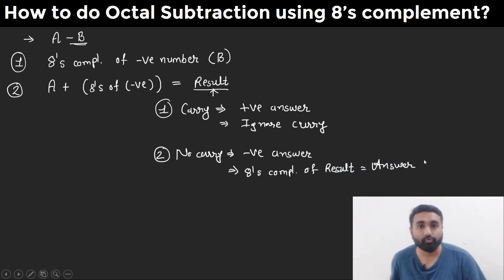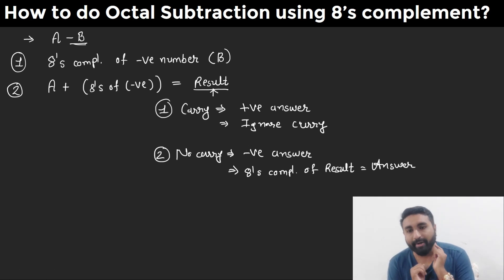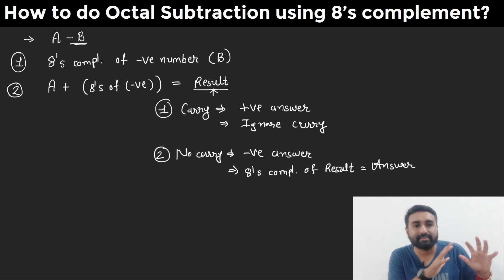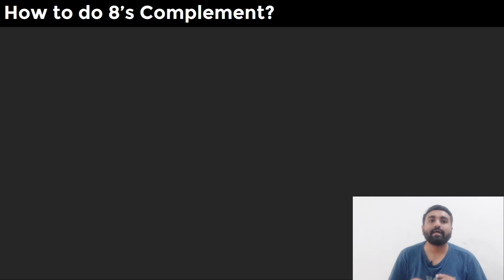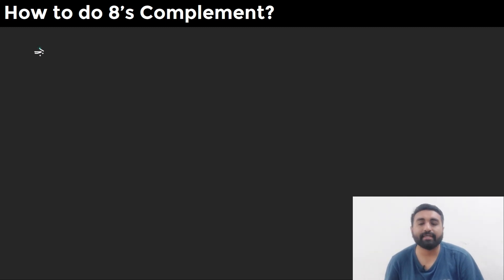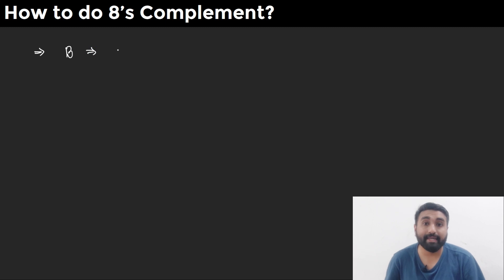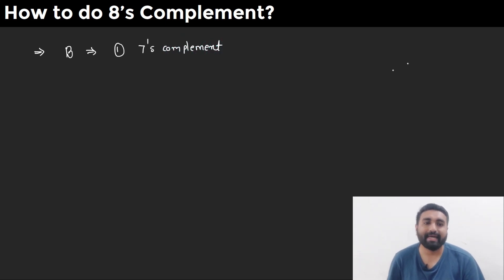These are the steps to follow for octal subtraction using 8's complement. But before proceeding to the examples, we should know how to take the 8's complement. The 8's complement is quite simple: if you have a number B and want to find its 8's complement, the first step is to find the 7's complement.